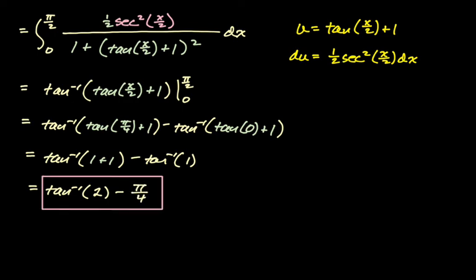This is a really useful substitution when you have just sine and just cosine and have no idea what to do. Sometimes making it look uglier with all these tan of x over 2 terms can make the problem a lot easier. I hope this was helpful and good luck.